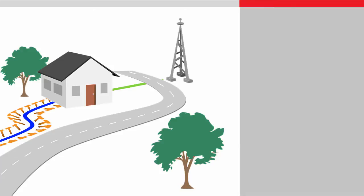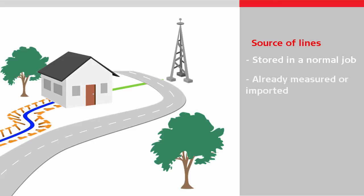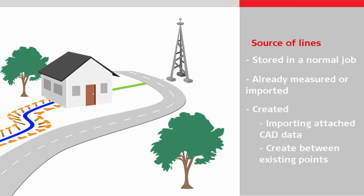Let's take a look at where our line might come from. As described in other Stake to Line videos, to be used in the Stake to Line app, the line must exist in a normal job. Either the line already exists in the job — for example it was already measured or imported — or it will need to be created, for example by importing attached CAD data, or by creating a new line using existing points.